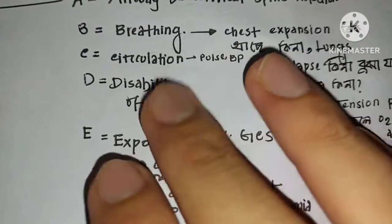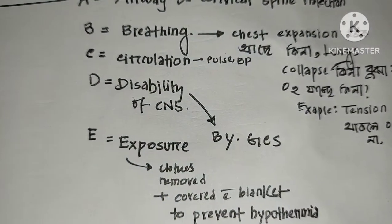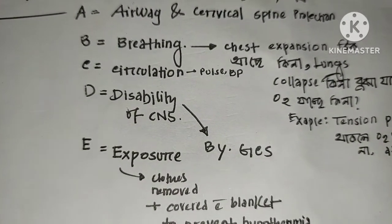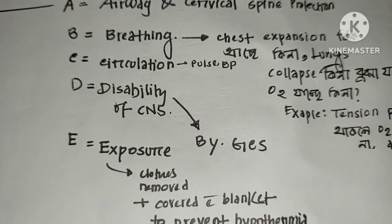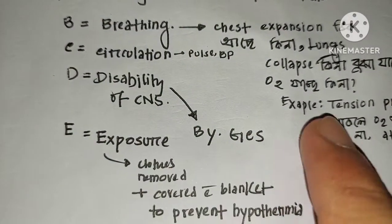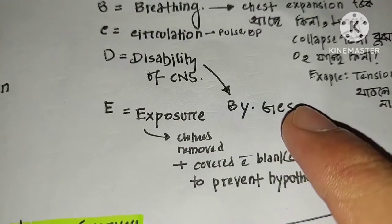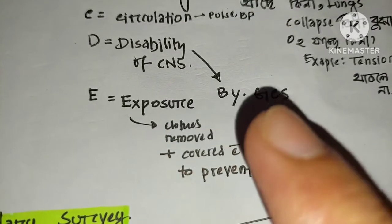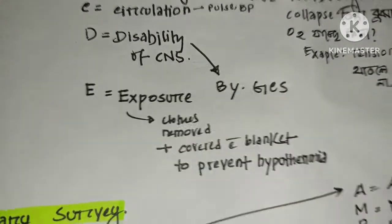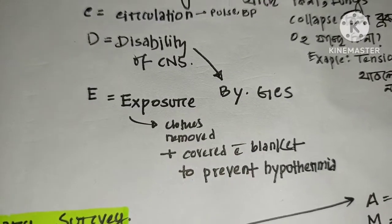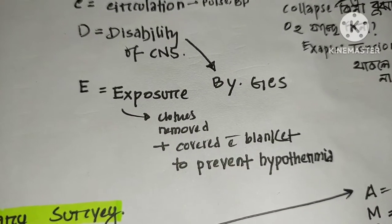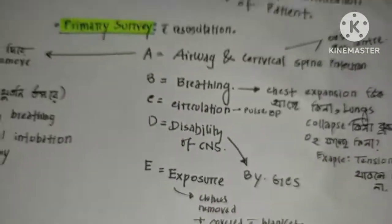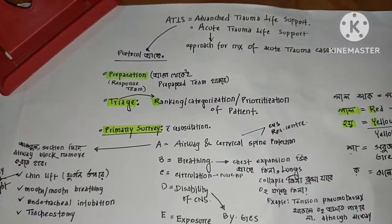Circulation involves checking the pulse and blood pressure. Disability refers to the central nervous system — the brain and spinal cord. We assess disability using the Glasgow Coma Scale to classify minor, major, or severe head injury. Exposure means removing the patient's clothes to fully examine them and prevent hypothermia.